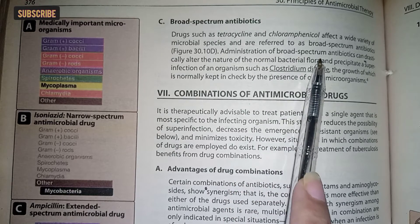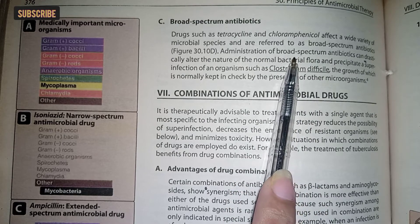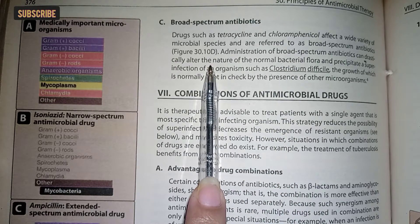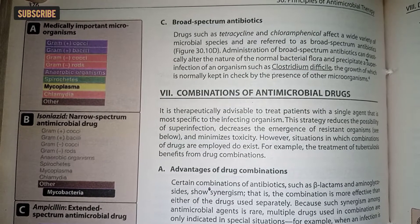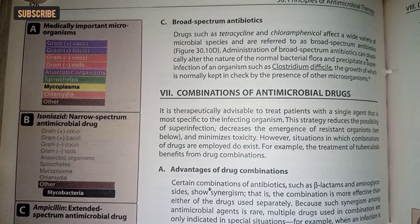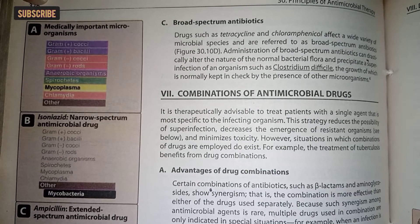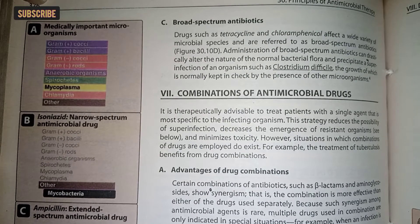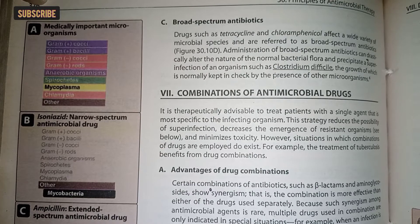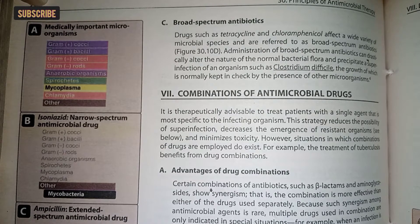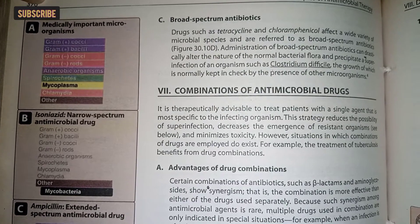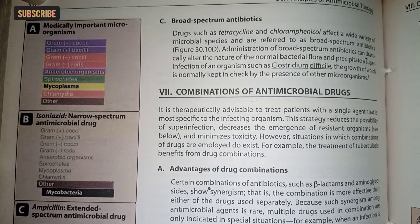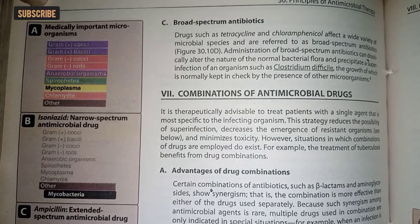اگر broad spectrum antibiotic administer کریں تو اس کی وجہ سے normal flora — جو normal bacteria ہماری body کے اندر، ہماری intestine میں ہوتے ہیں — وہ change ہو جاتی ہے۔ اسے superinfection یا second infection بھی کہا جاتا ہے — مطلب جو cell already infected ہے وہ co-infected ہو جاتا ہے with another organism۔ اس وجہ سے ہمیں microorganism کی presence کو check کرنا ضروری ہوتا ہے۔